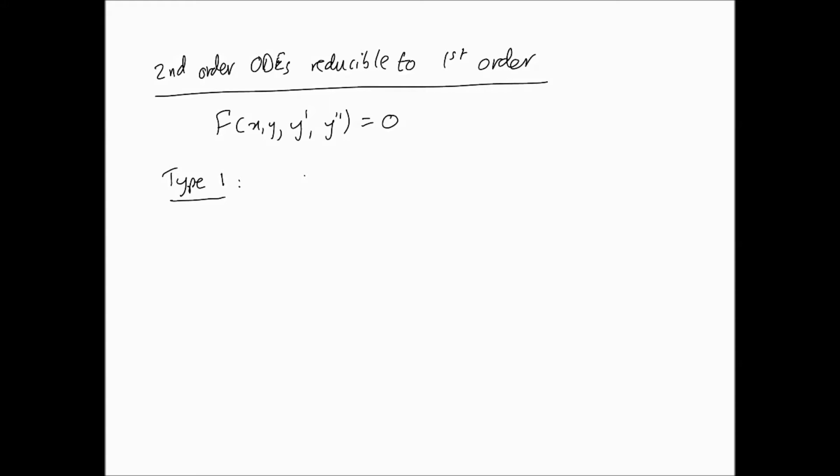Usually, type 1 is where y, the dependent variable, is missing. So when y is missing, because remember we're looking at a situation where y is a function of x, we call it type 1, and in that case what you're looking at is F(x, y', y'')=0. I'm going to solve that equation.